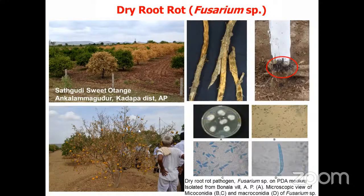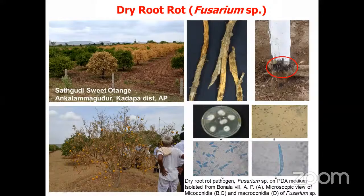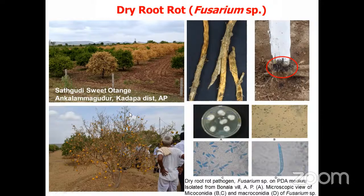Samples from the Kadapa region yielded several Fusarium species, showing both macroconidia and microconidia. Researchers like Ramana have also identified improved bioagents including Trichoderma species. Dry root rot caused by Fusarium solani remains a huge problem especially in the Satgudi-Suitolagam area.